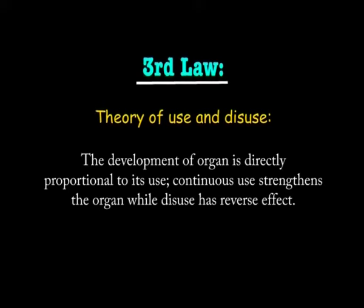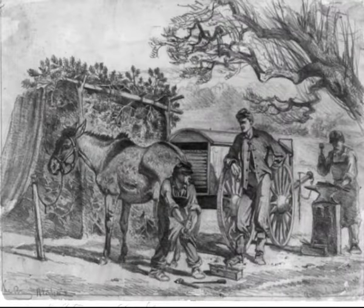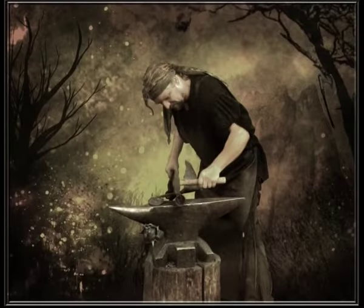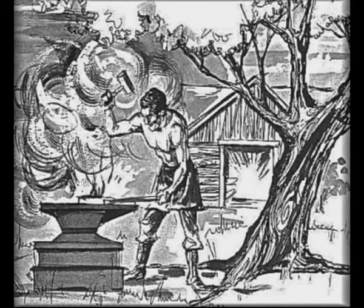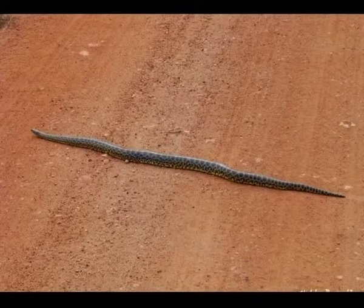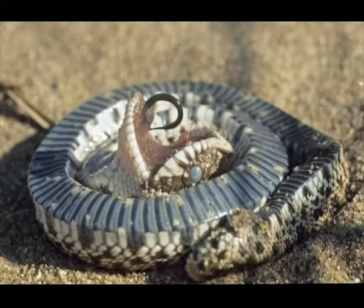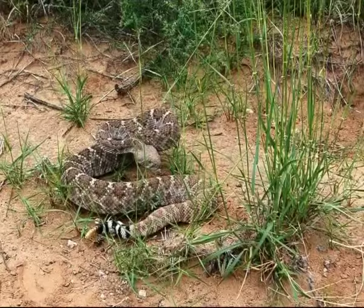The third law is the Theory of Use and Disuse. This law states that the development of organs is directly proportional to their use. Continuous use strengthens the organ while disuse has the reverse effect. For example, there is development of strong bicep muscles in a blacksmith, and elongated body and loss of limbs in snakes due to continuous creeping through holes and crevices.